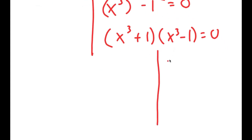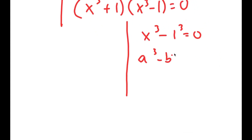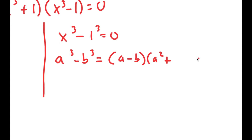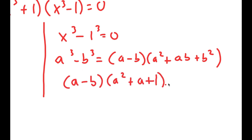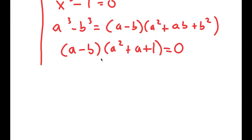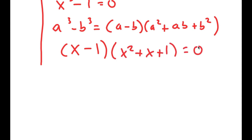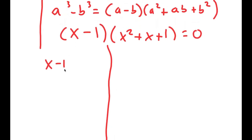Now for x to the power of 3 minus 1 equals 0, I'm going to rewrite this as x to the power of 3 minus 1 to the power of 3 equals 0. So I can use the property a cubed minus b cubed equals a minus b times a squared plus ab plus b squared. This turns into x minus 1 times x squared plus x plus 1 is equal to 0, which gives me yet another two equations: x minus 1 equals 0, and x squared plus x plus 1 equals 0.